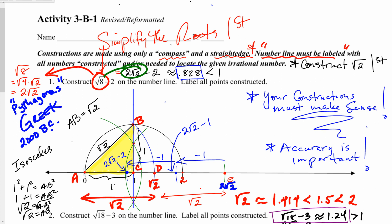Good morning, everybody. This is Mr. Ainsworth again, and we are in MRWC. We're going to work on the last portion of Activity 3B1. This is a revised activity that I made because the first one was not student-friendly in respect to the format, and I revised some of the questions. But the intent and the meaning behind everything is the same.